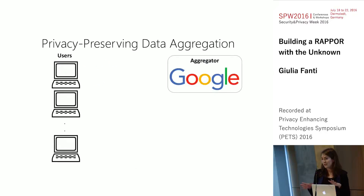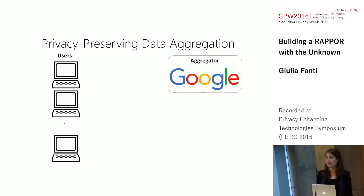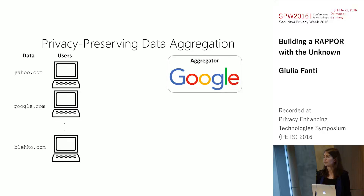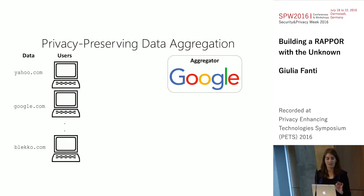While we don't know that much about what exactly Apple is doing, in the case of Google, the setup looks something like this. You have a collection of users and an aggregator — in this case, Google. These users have some data that's of interest to the aggregator. For example, that data might be the default browser homepage for each user. The aggregator is interested in learning some population-level statistics, like the distribution of this data, without learning individual users' data elements.